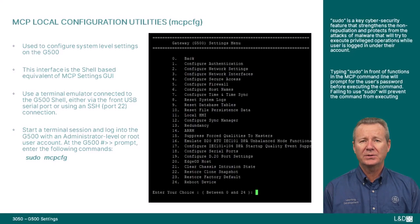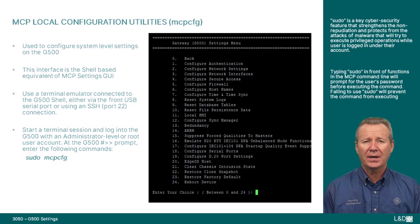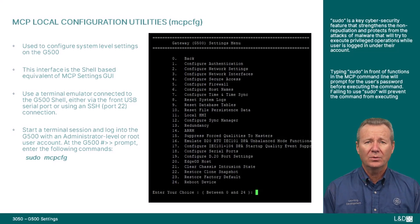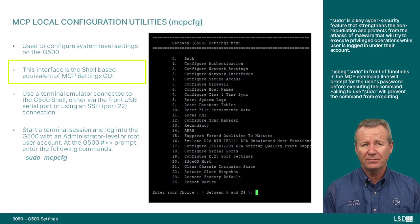The local G500 settings, including serial ports, network configuration, time settings, administrator user management, etc., are managed using either the MCP local configuration utility or the MCP settings GUI. The functionality of the system is identical when settings are performed — the only difference being one is a shell-based interface and the other is a web-based interface.